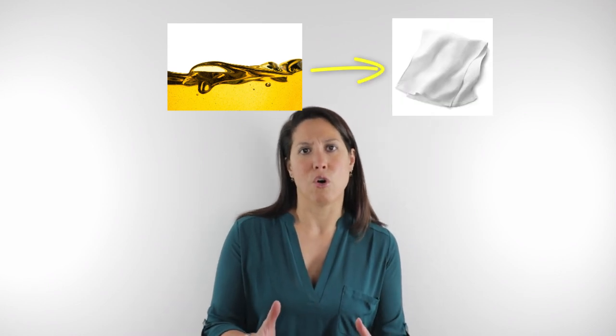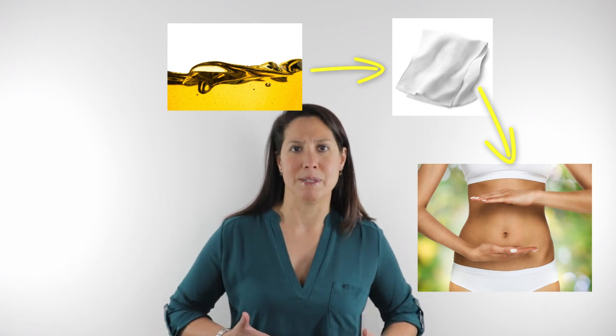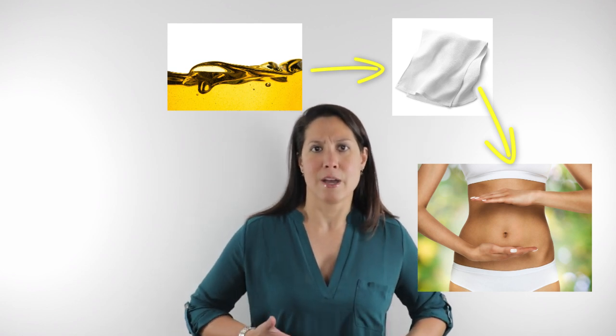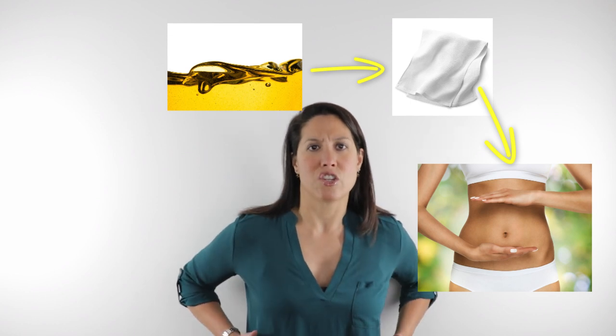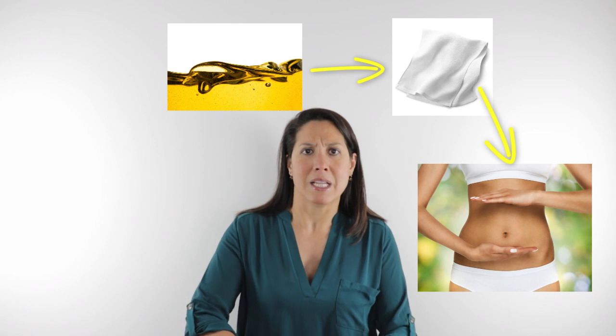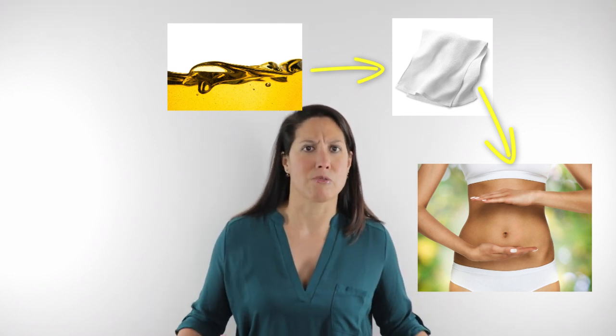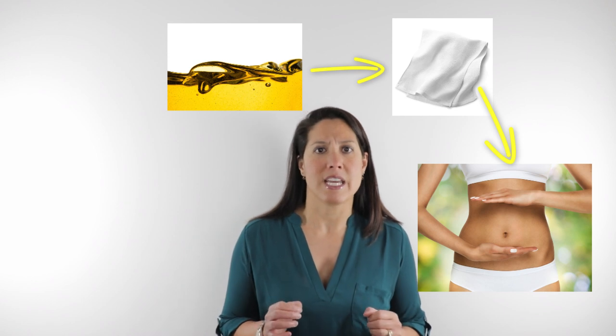Now how this castor oil pack works is that we put a little bit of castor oil onto a piece of flannel. Then we put that flannel over either the liver or you can put it over the entire abdomen. So usually I will say put it from bra line to pubic bone and then straight across the entire abdomen. Then you want to put a piece of plastic over it, so it can be a piece of saran wrap or it can be a plastic bag.